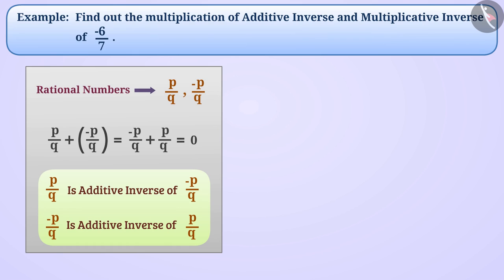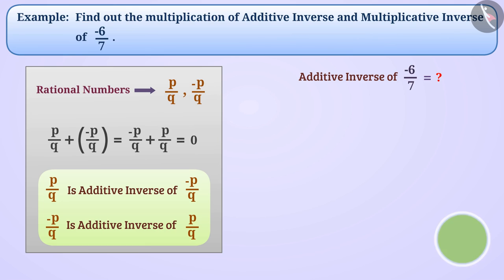Can you tell me the additive inverse of minus 6 by 7? Since minus 6 by 7 plus 6 by 7 is equal to 0, therefore the additive inverse of minus 6 by 7 is 6 by 7.